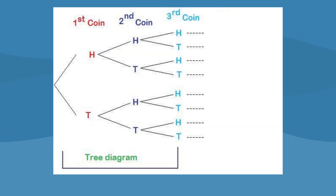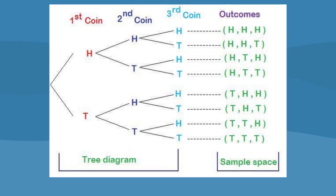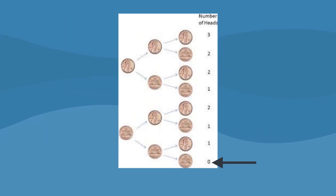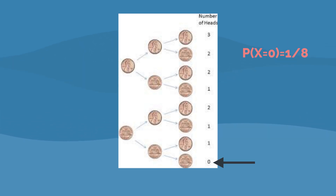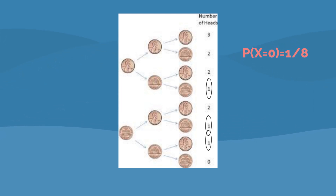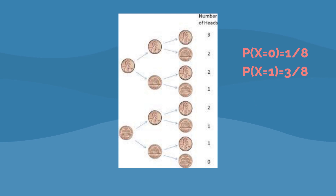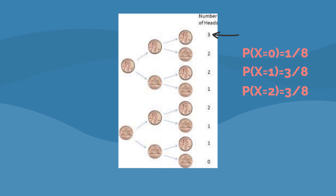Let's see how we can describe a probability distribution. Define random variable X as the number of heads after three flips of a fair coin. We could have one of eight possible outcomes. The probability of X equals 0 is one eighth. The probability of X equals 1 is three eighths. Similarly, the probability of X equals 2 is three eighths, and the probability of X equals 3 is one eighth.